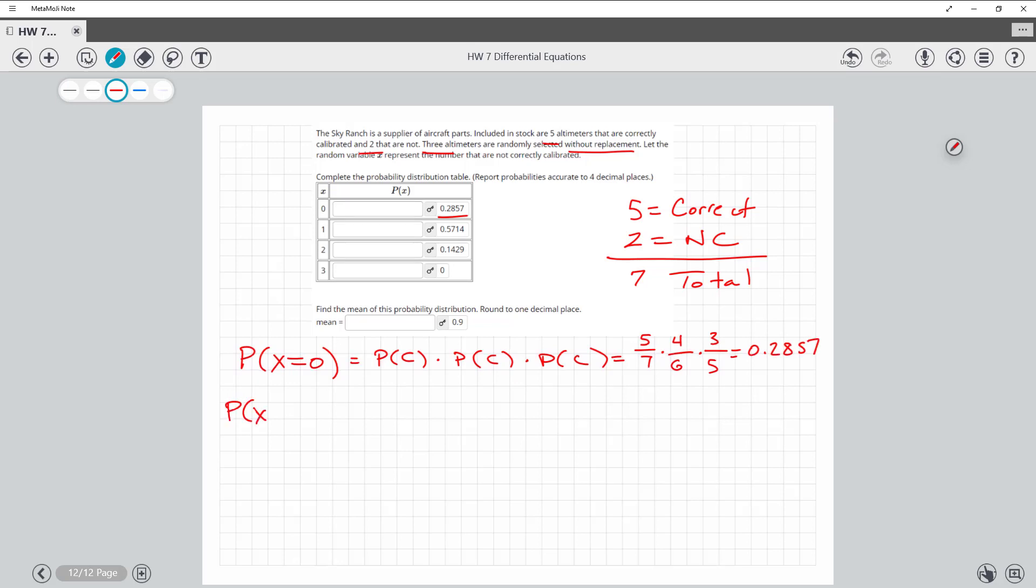All right, if I want to know if one is not correct, this one's a little trickier because could it be the first one's not correct and then the other two are correct, or could it be the first one's correct, the second one is not correct, this one's correct, or could it be this? And so you're going to notice if you work these, you're going to get the same probability. So not correct is two out of seven times now correct, five, and we have six left. We have four correct out of five. So I take two-sevenths times five-sixths times four-fifths, and I get this 0.19047.